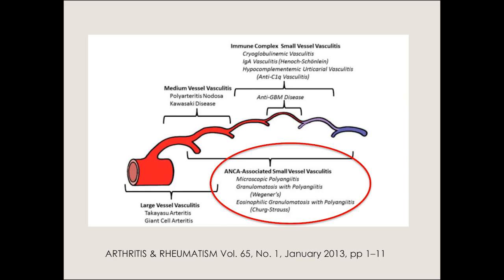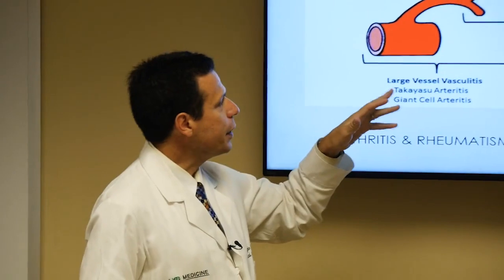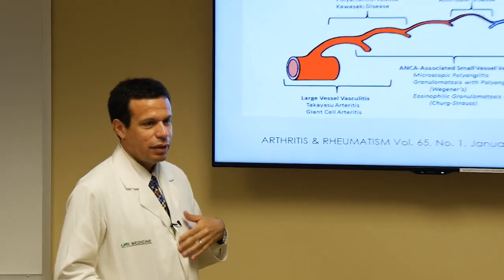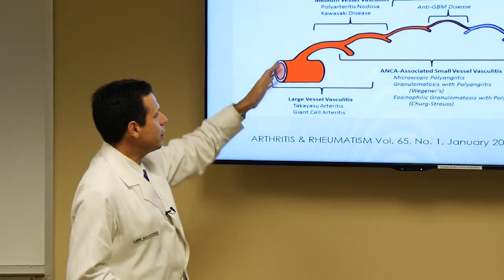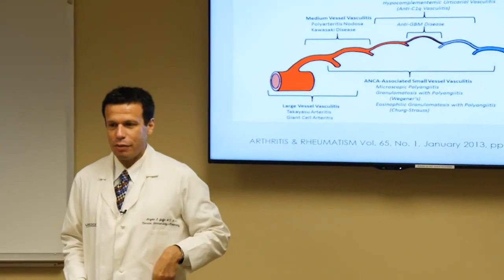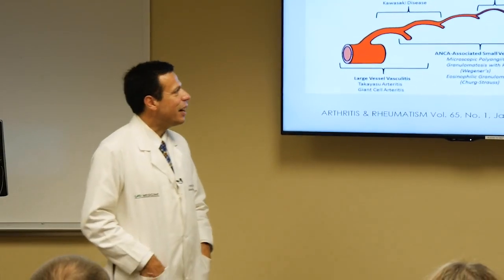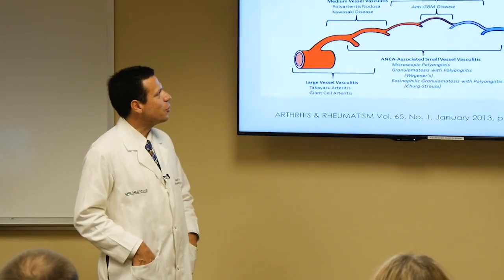This is the most recent version of the nomenclature of vasculitis in general. Vasculitis is classified based on blood vessel size. There are large vessel vasculitis that mainly include Takayasu's and giant cell arteritis. There are medium vessel vasculitis — the paradigm being polyarteritis nodosa. We don't see a whole lot of Kawasaki's in adult practices, but pediatricians see it quite often.